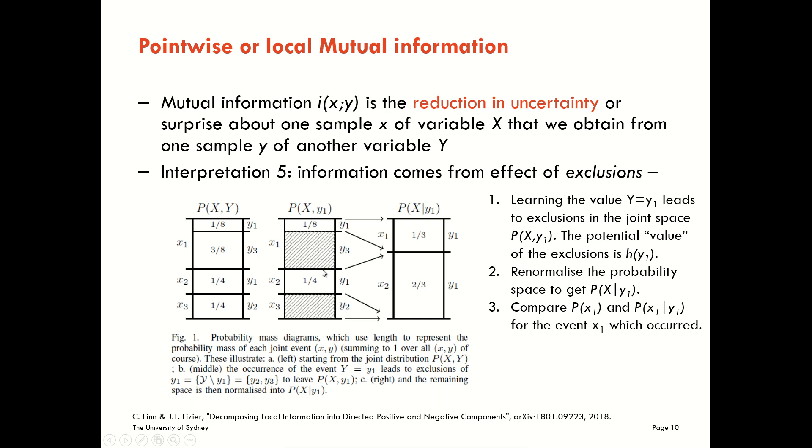The potential value of those exclusions is the Shannon information content of Y1 here. The less probable that Y1 is, the more we exclude, and the more valuable those exclusions are for informing us, the more potential value there is in those exclusions for informing us about X.